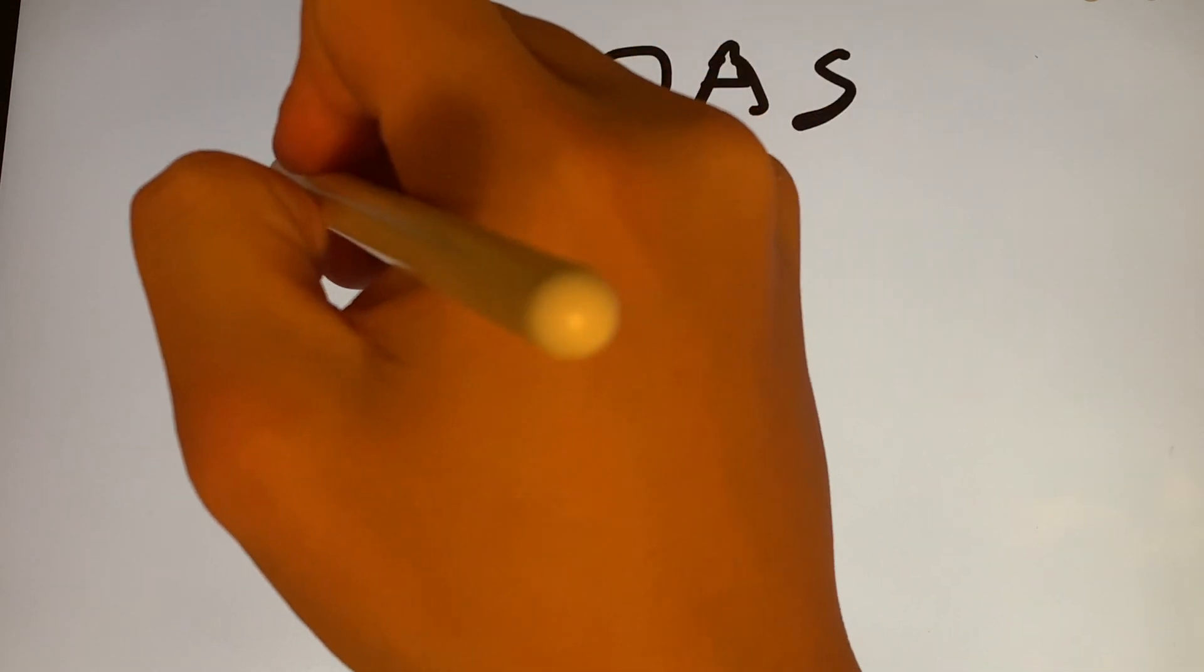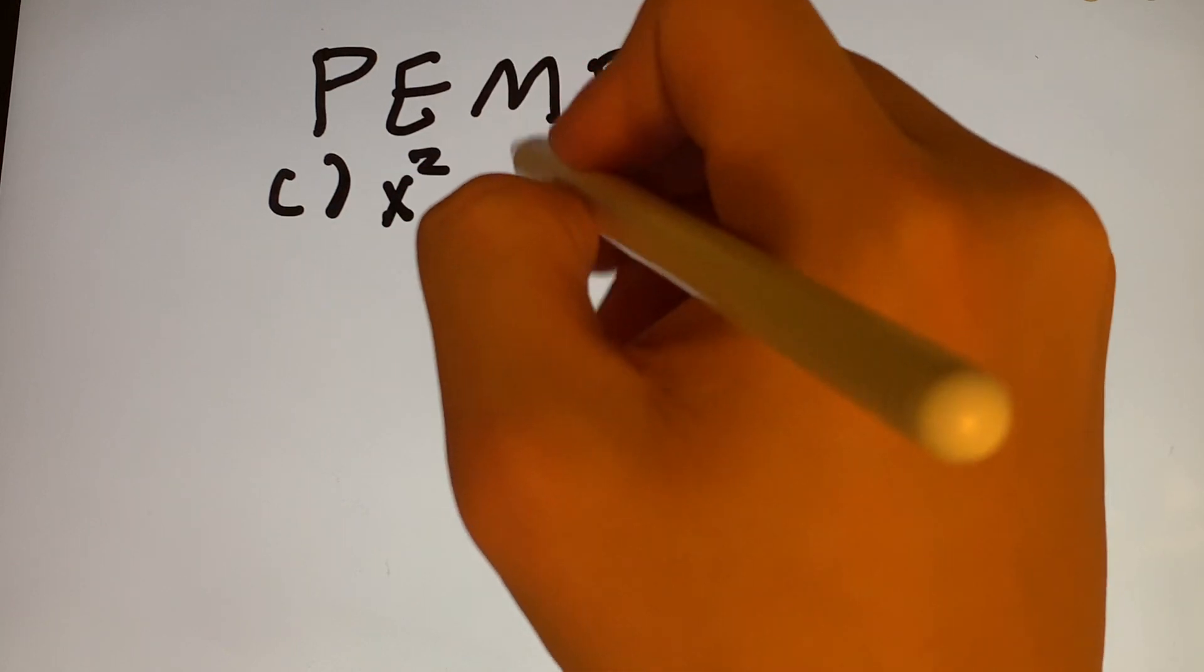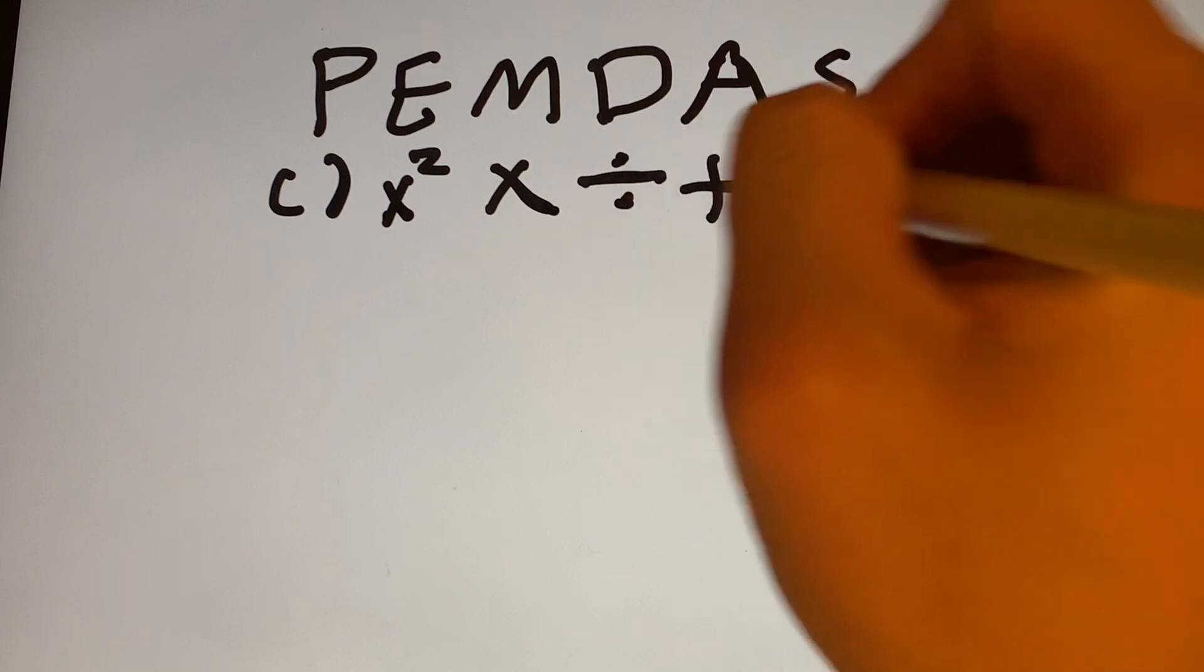PEMDAS stands for parentheses, which is P, exponents, which is E, M is going to be multiplication, division, addition, and subtraction.